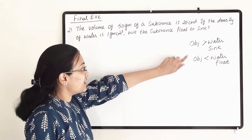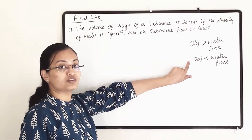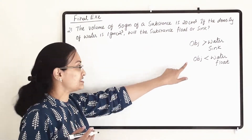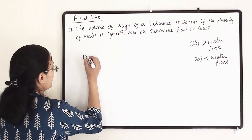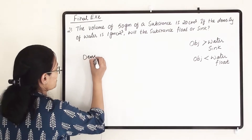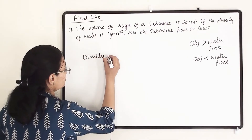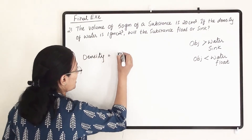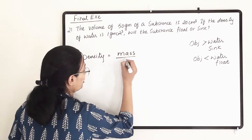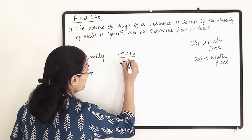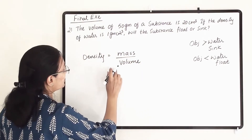So first we have to find out the object or substance density. The formula for density is: density equals mass divided by volume.